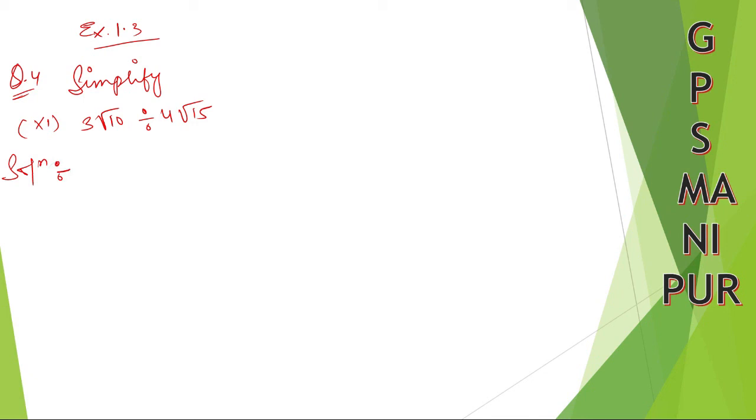Solution: 3 root 10 divided by 4 root 15. Look here, it is divided sign. So let's tackle it. So take 10. 2 times 5 is 10, right? So 3 into root of 2 into 5 divided by...